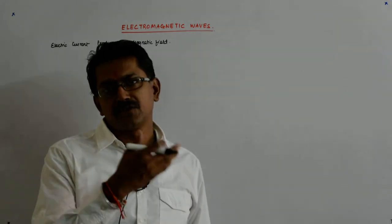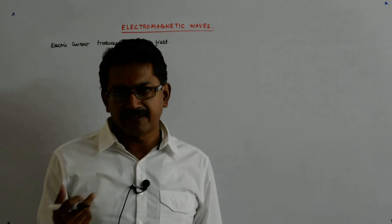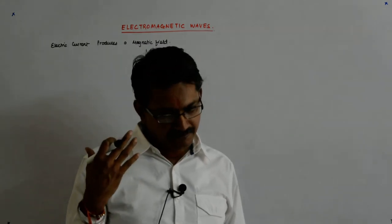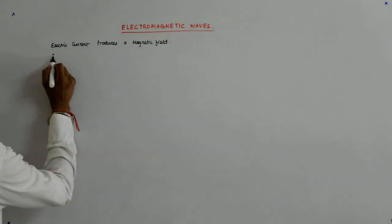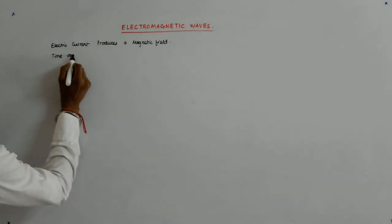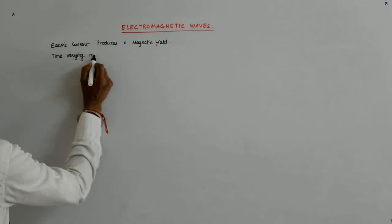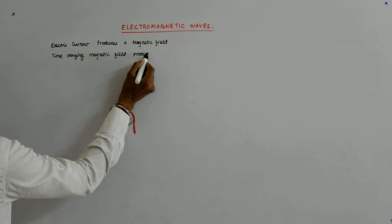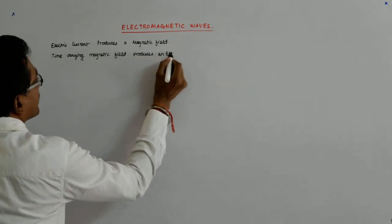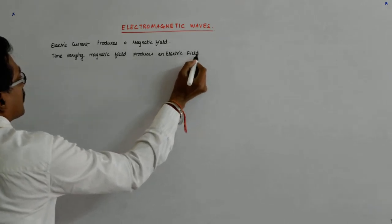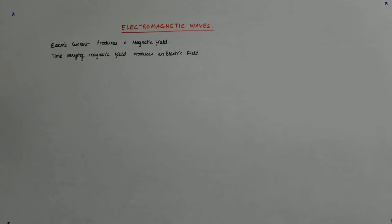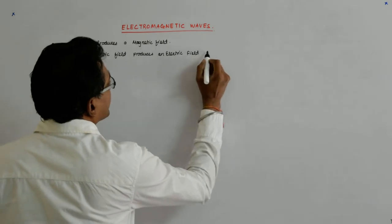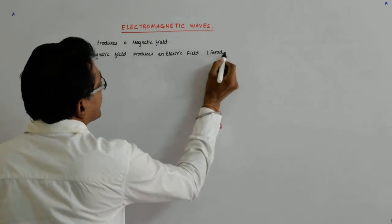Because there was an induced EMF and hence a current, and if there is an induced EMF it means there was an induced electric field. So a time-varying magnetic field produces an electric field — this is the whole connotation of electromagnetic induction. A time-varying magnetic field produces an electric field: that is Faraday's law of electromagnetic induction.